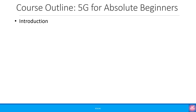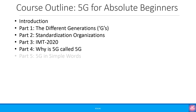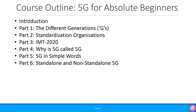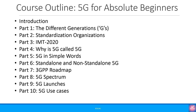So here is the course outline and how I plan to do it. In part one, we will look at the different generations. In part two, we will look at standardization organizations. Part three would be IMT 2020. Part four, why is 5G called 5G? Part five, 5G in simple words. Part six, standalone and non-standalone 5G. Part seven, 3GPP roadmap. Part eight, we will look at 5G spectrum. Part nine would be some high profile 5G launches. Part 10 would be 5G use cases. And part 11 would be course summary and conclusion.